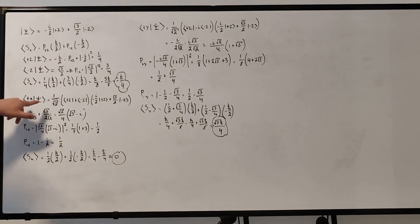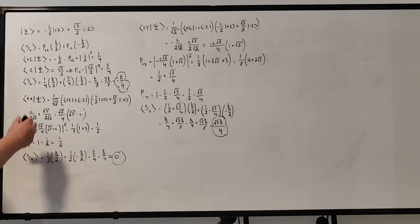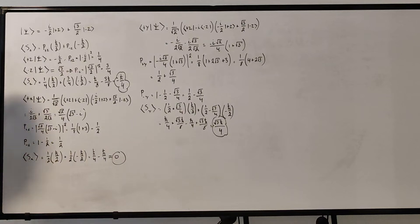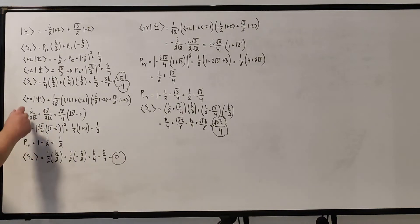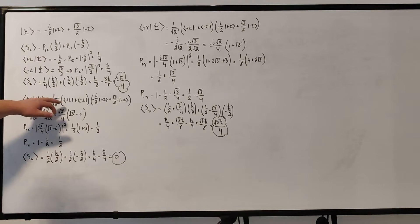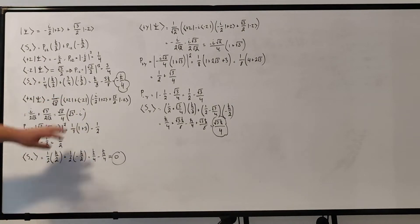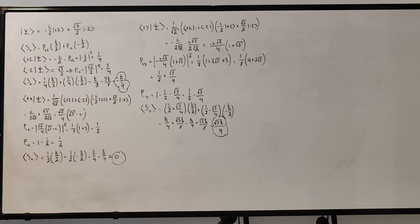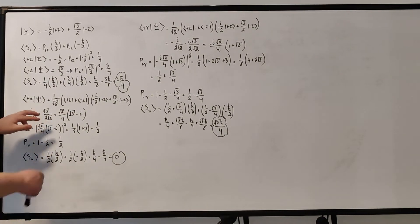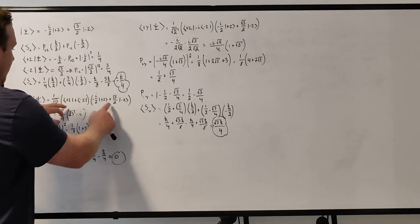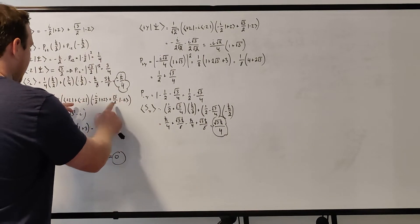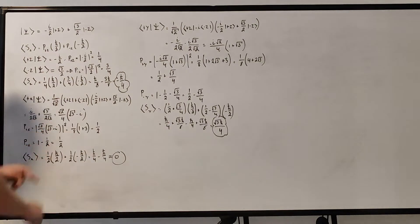Now for the x component, we find the inner product of psi and plus x. Writing plus x in terms of the z basis, we have the bra version of plus x: 1 over root 2 times (plus z + minus z), multiplied by the state psi. During the multiplication, you get minus i over 2 root 2. The components where you get plus z and minus z cancel, because that's zero — they go away.